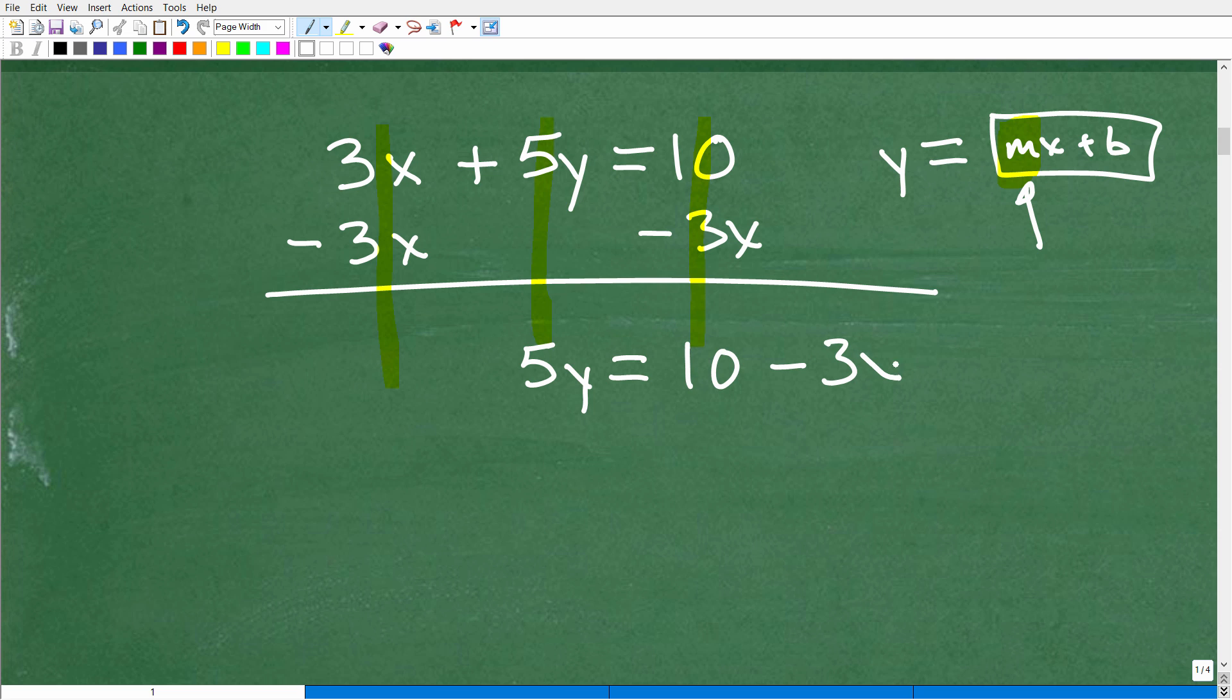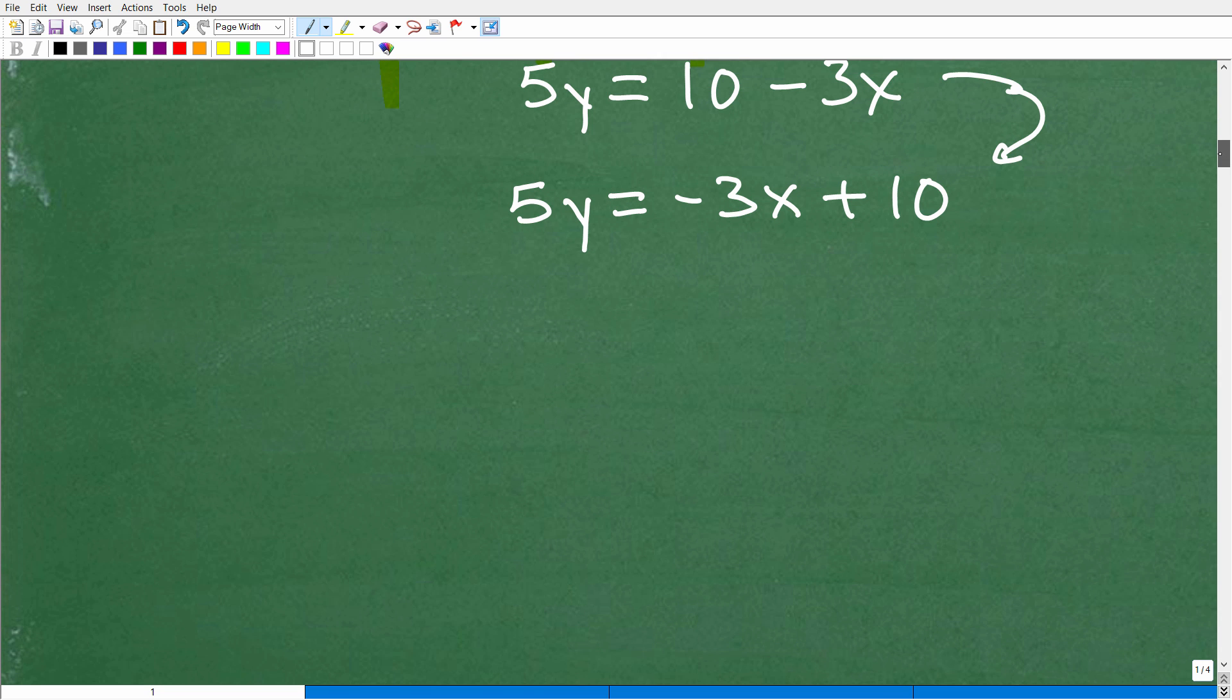Now, I could write this as 10 minus 3X. However, 10 minus 3X is the same thing as 5Y equals negative 3X plus 10. This is the same thing. Now, why would I write it this way? Well, because our slope-intercept form, we have that X term first. I want to get this into Y equals MX plus B format. So the X comes first, and then the number. All right, so let's continue on. And to solve for Y, what do I have to do? Well, I've got to divide everything by 5. The entire equation by 5.